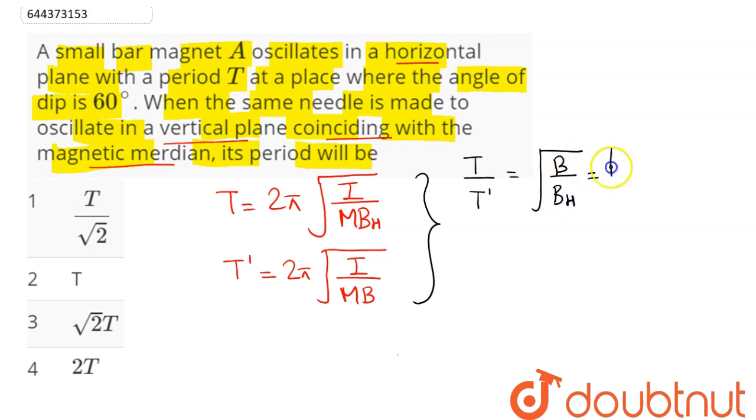Now Bh can be written as B·cos(δ), where δ is the angle of dip given in the question as 60°. Hence B and B cancels out, so we have T' = T·√(cos δ).